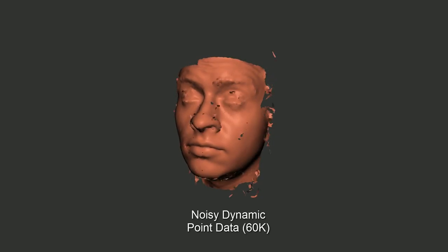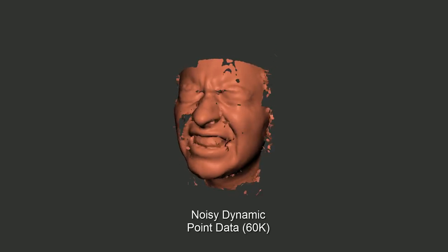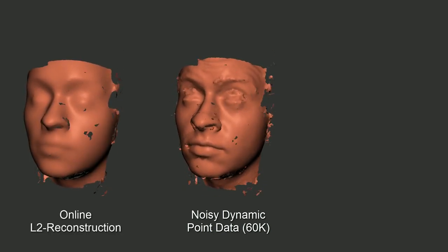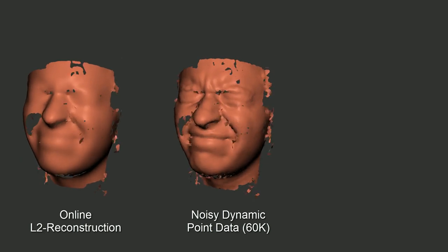In dynamic surface reconstruction, noise and outlier-driven data poses a difficult challenge for maintaining both good performance and good output quality. Current online methods perform an L2-based reconstruction, reducing noise by smoothing.